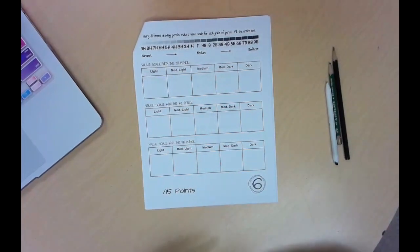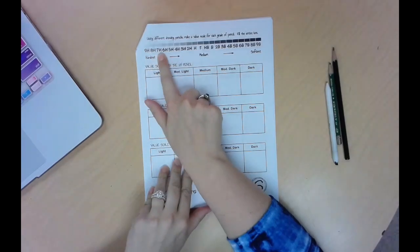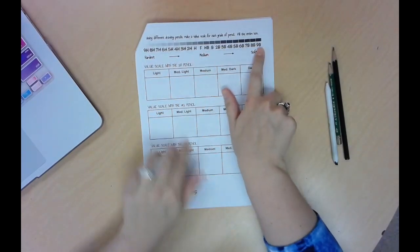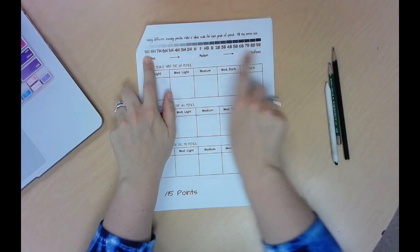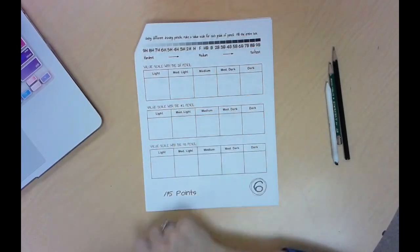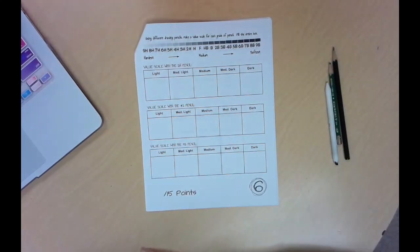So there are a lot of different types of drawing pencils. If you see at the top it has a value scale of different drawing pencils and we start with 9H and we go all the way to 9B. So these are all different types of drawing pencils. For our project we're just going to use three though because I want to keep it a little simple for you.